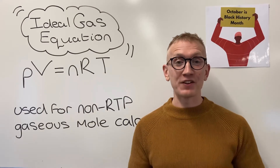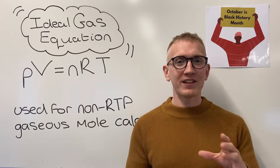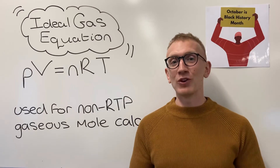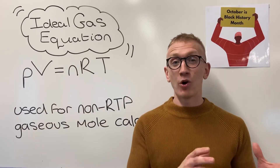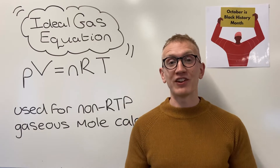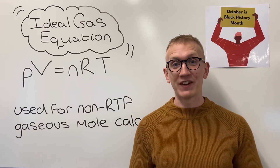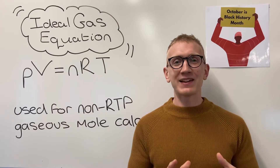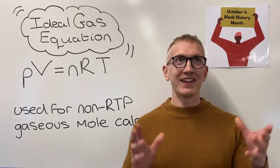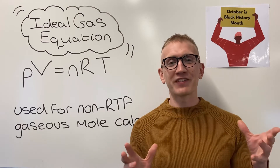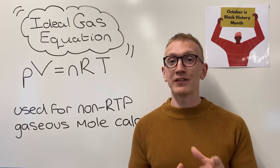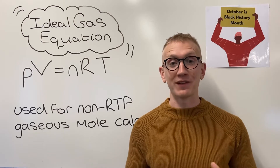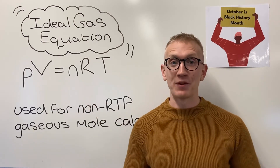The molar gas volume you'll find on your OCR data sheet is 24.0 decimetres cubed per mole, and we use that when we're looking at trying to calculate the moles of a gas at room temperature and pressure, which is 298 kelvin and 100 kilopascals. To calculate the moles of a gas at room temperature and pressure it's really straightforward — you just take the volume of the gas in decimetres cubed and divide it by 24.0, and hey presto you have your moles.